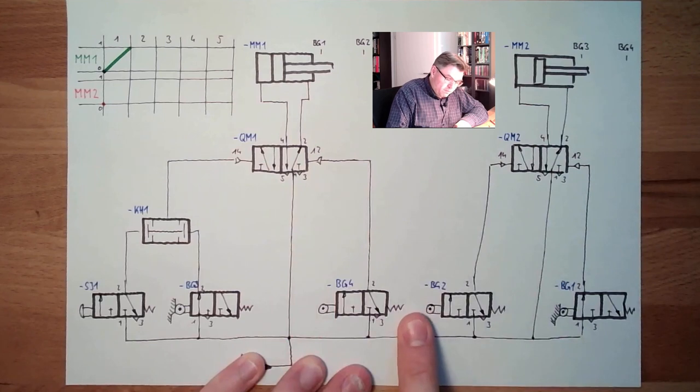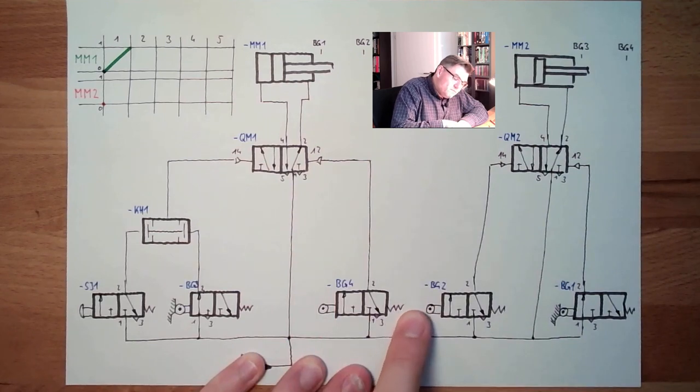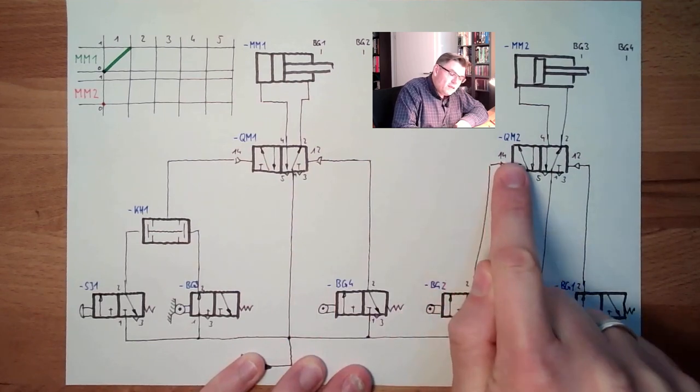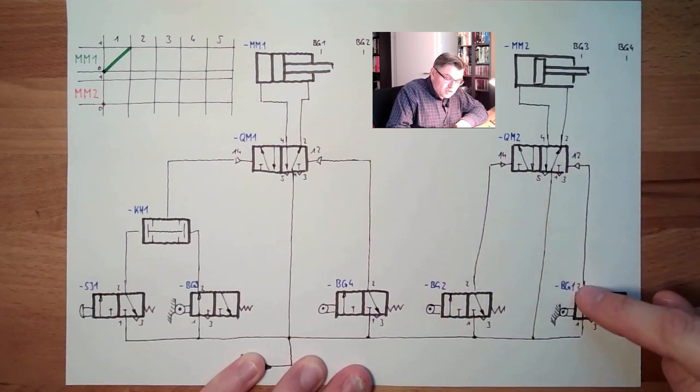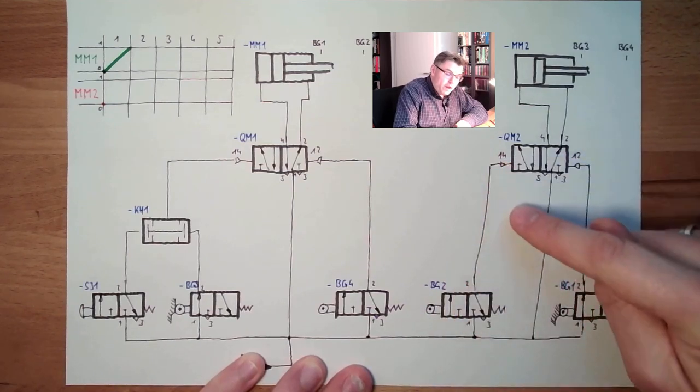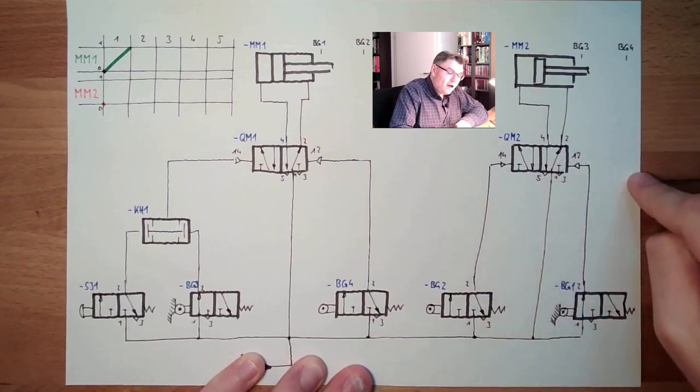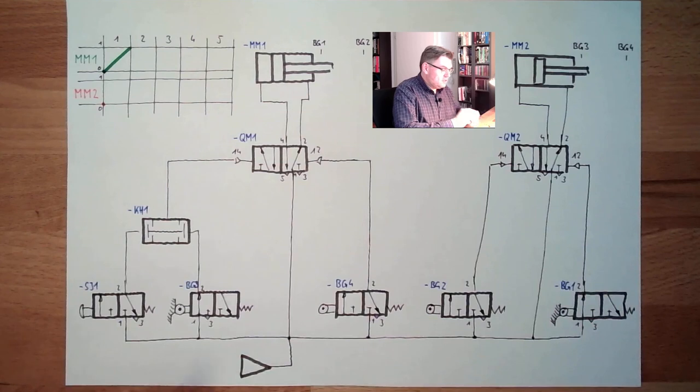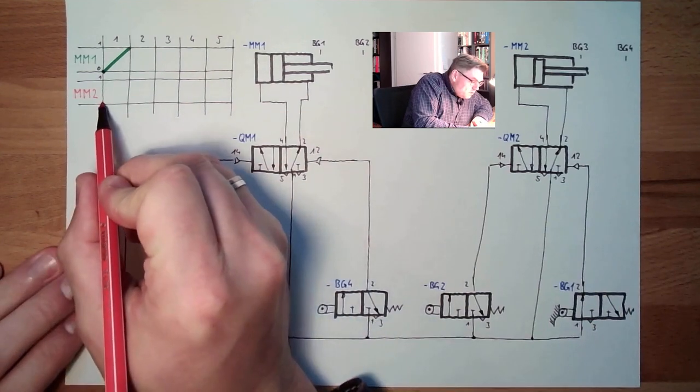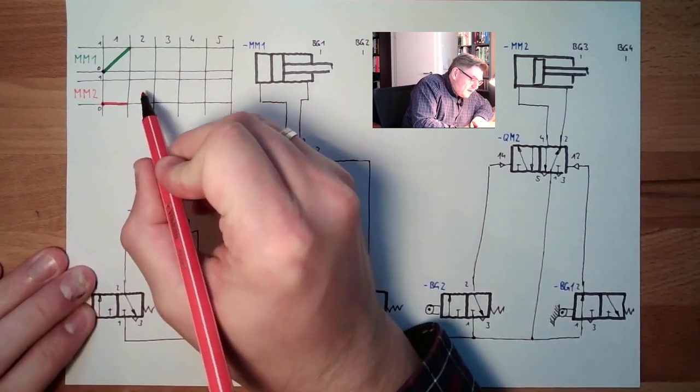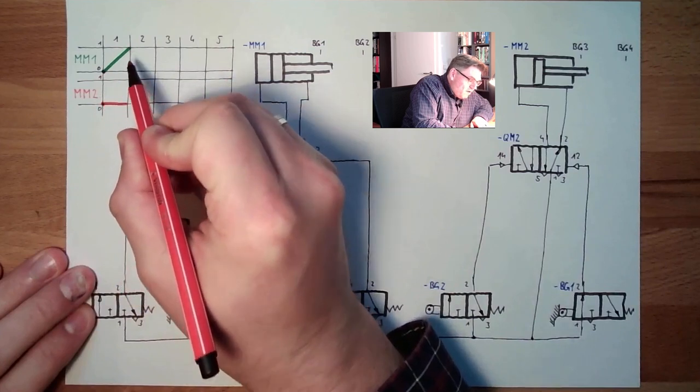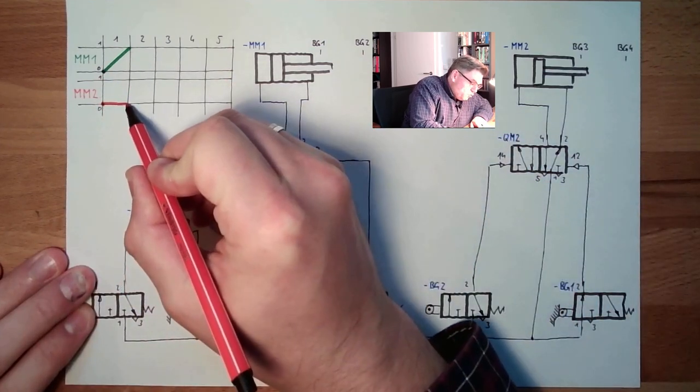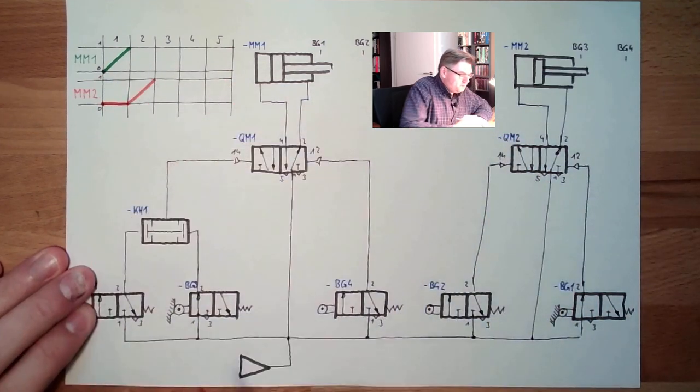The next thing is that PG2 is going to be operated. We will operate this and add pressure at the 1-4 line. This we just relieved, this now we add. So QM2 is switching to the other position and MM2 is starting to travel. This is the second step. In the second step, after the travel of MM1, MM2 will start to travel.